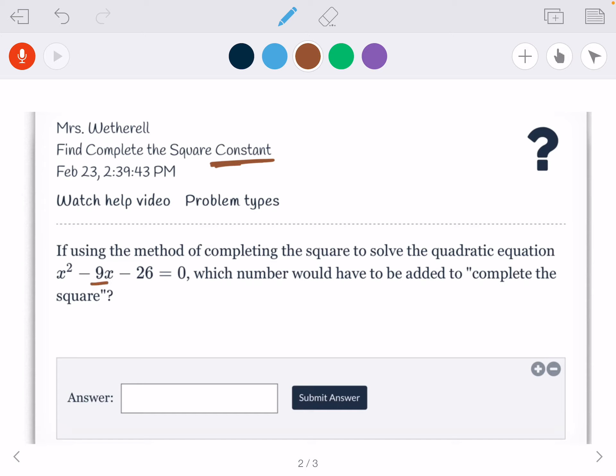I take half of my b, so I take 9 and divide it by 2. Now I'm going to leave it in fraction form. You can change it to decimal form if you want, but it's easier for me to do it in fraction form. Because I have half of b now, 9 divided by 2, that's half of it. All I have to do is square it, and that's 81 over 4. So I can type 81 divided by 4 and hit submit.